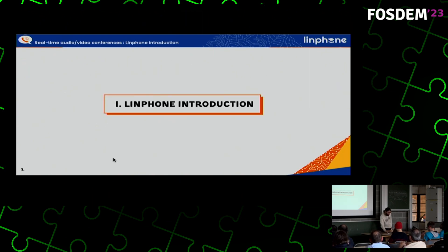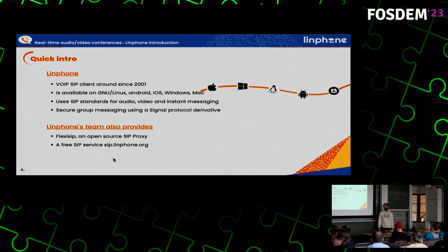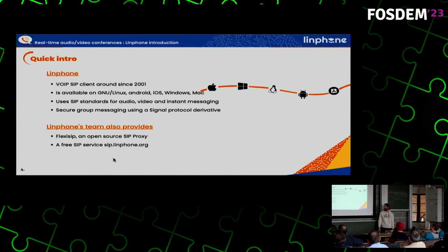Just a couple of words about Linphone. Linphone is a Voice over IP client implementing the SIP protocol which started in early 2000. It's available on Linux, Android, iOS, Windows and Mac. It uses SIP as the base standard for almost everything, including audio, video call, and instant messaging presence — everything required for real-time communication. It also provides end-to-end encryption for messaging based on the Signal protocol. The Linphone team developed the Linphone software but also a SIP server which is basically a SIP proxy, and if you want to use a SIP account, it's possible to create one on our website for testing purposes.